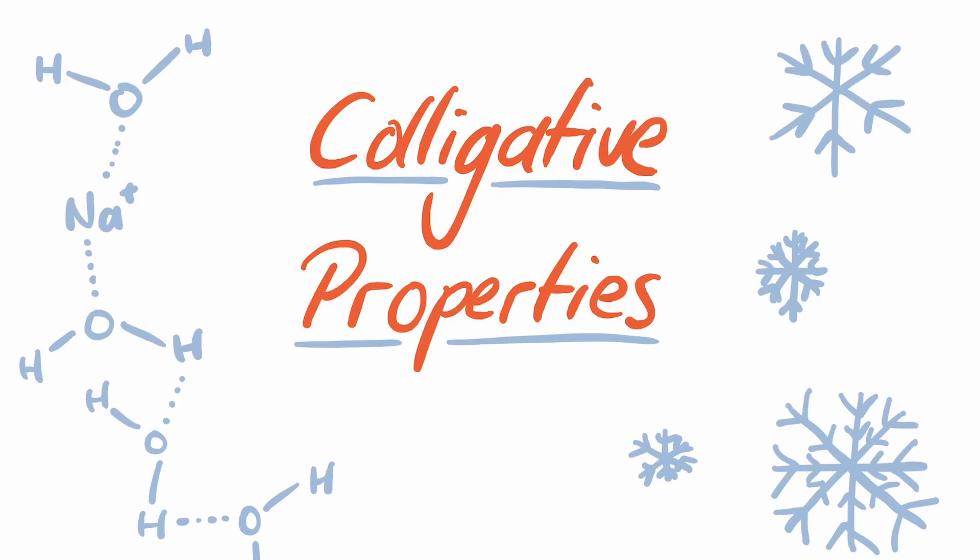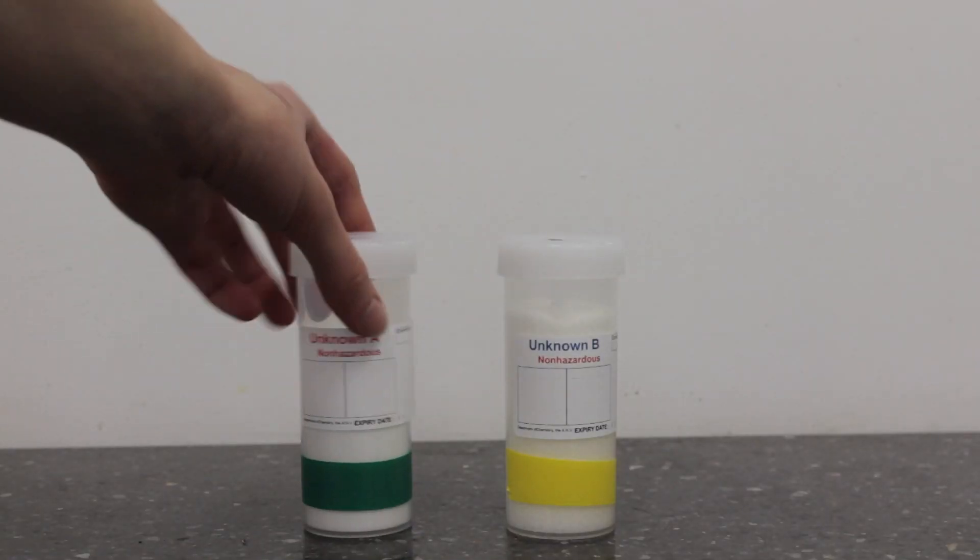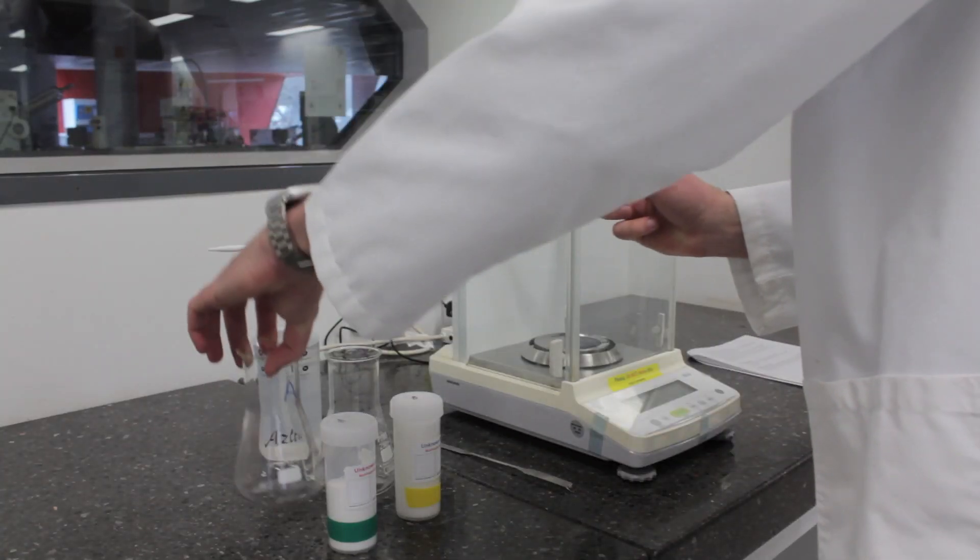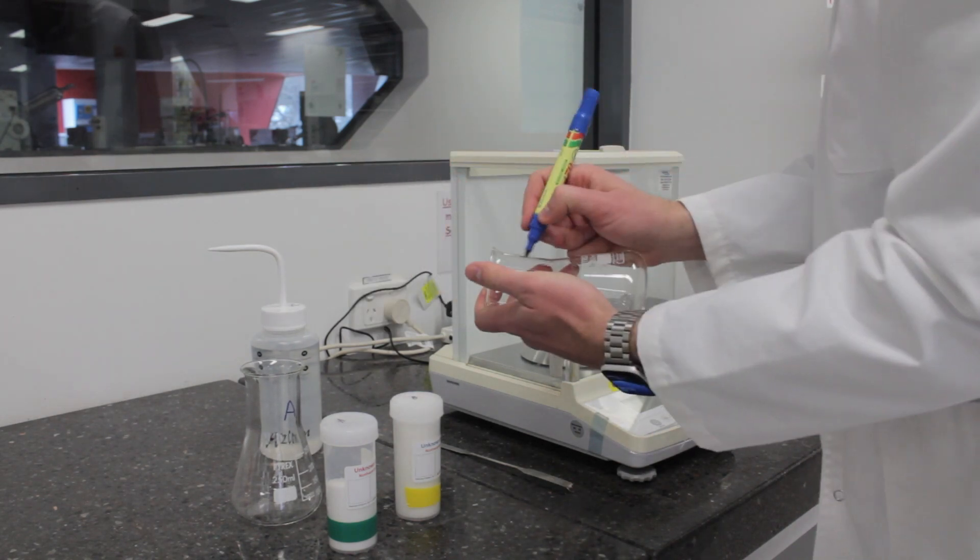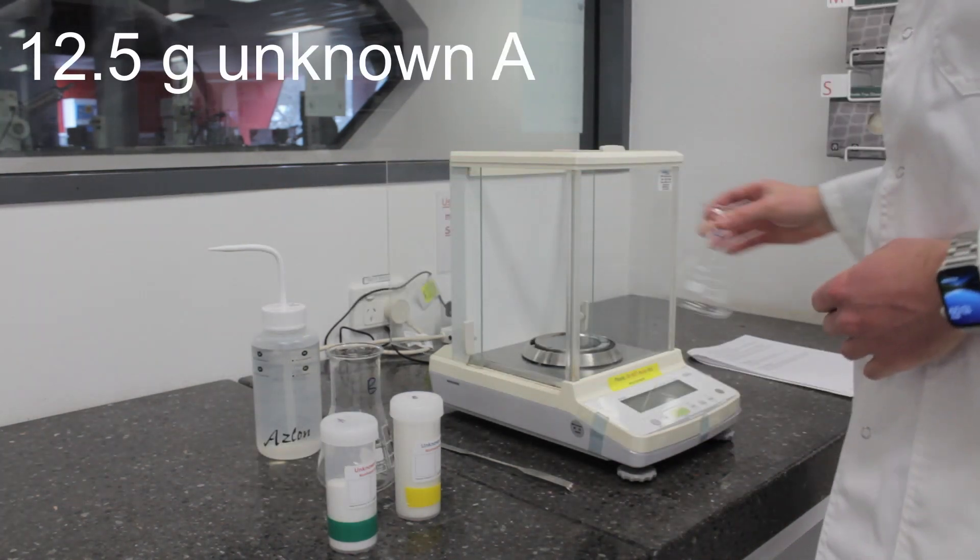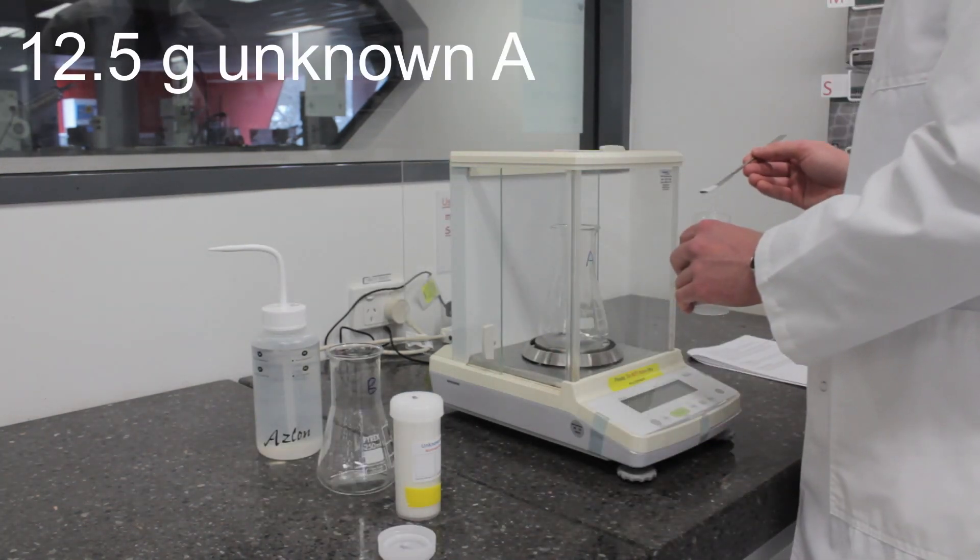These unknowns take a while to dissolve, so let's first make up these solutions. Label two 250 ml conical flasks with A and B and then weigh out 12.5 grams of unknown A into one of the flasks.